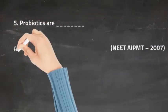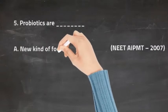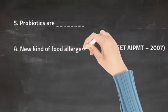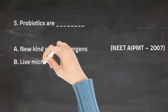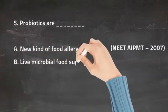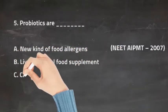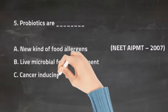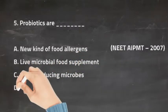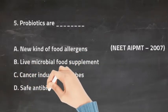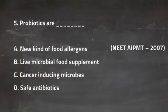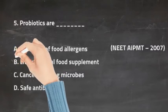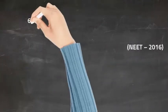Q5: Probiotics are — Option A New Kind of Food Allergens, Option B Live Microbial Food Supplement, Option C Cancer Inducing Microbes, and Option D Safe Antibiotics. The right answer is Option B, Live Microbial Food Supplement.